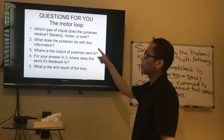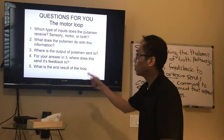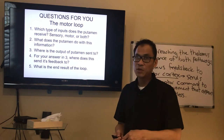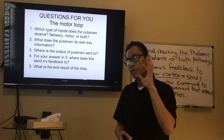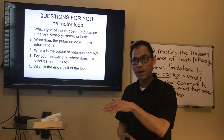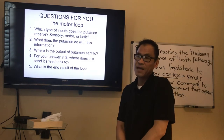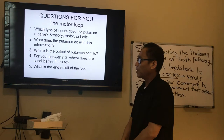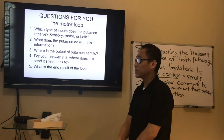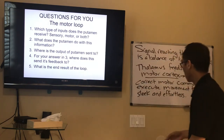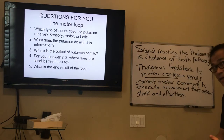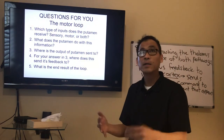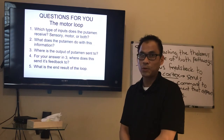Review questions: Which type of inputs does the putamen receive? Both sensory and motor. What does the putamen do? It's a processing center that comes up with a plan using two pathways — direct and indirect. The direct pathway facilitates the goal-oriented movement; the indirect pathway suppresses competing movements. Output goes to the thalamus, which sends feedback to the motor cortex. The end result: movement that seems sleek and effortless. When you rehearse a dance routine, you're developing your motor loop.